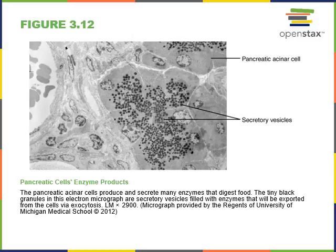An example involves pancreatic cells that have secretory vesicles filled with enzymes and hormones. These secretory vesicles release digestive enzymes via exocytosis from the pancreas through ducts that connect into the small intestine, where those enzymes break down chemicals in food and release nutrients for absorption.